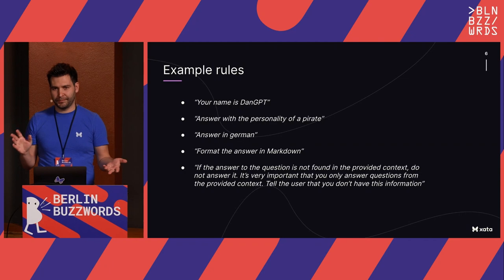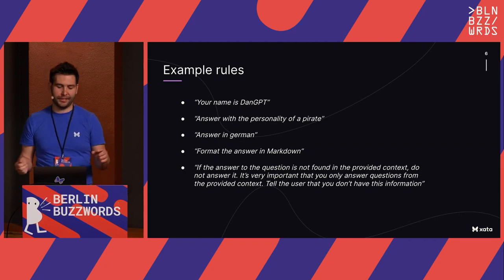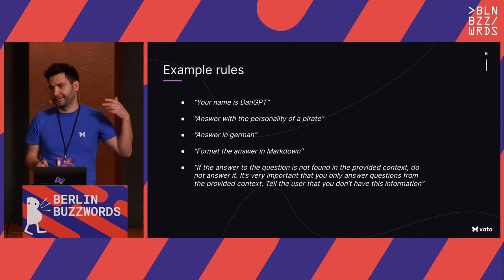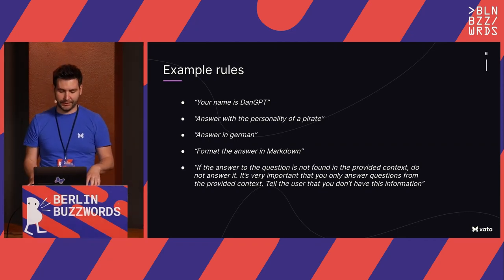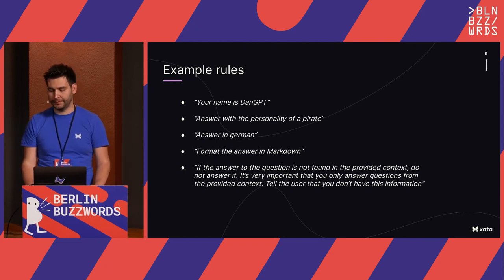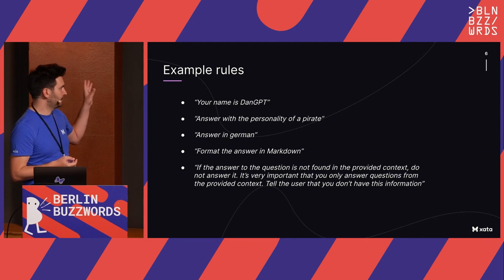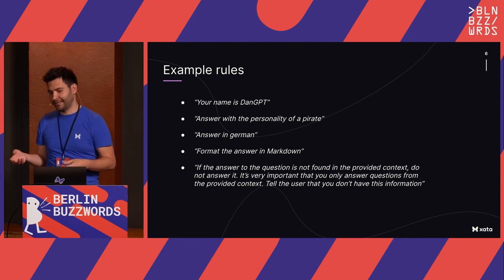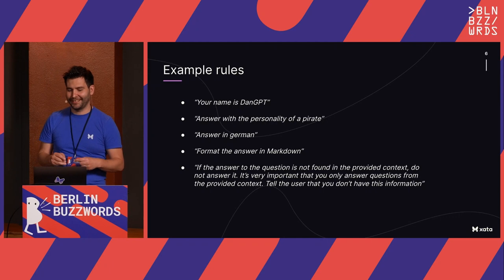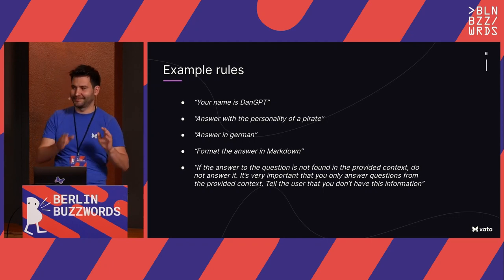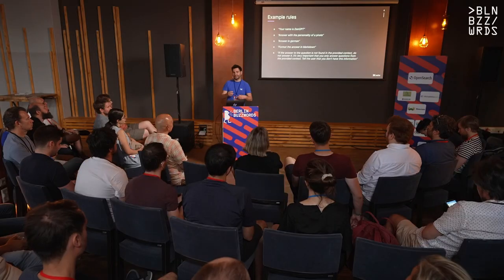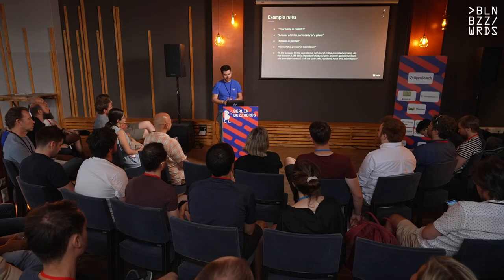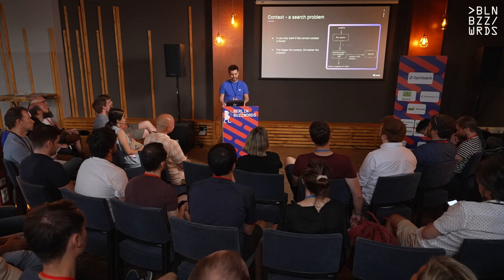Some example rules: you can do pretty much anything in plain English — give your bot a name, a personality, specify formatting like markdown when there's code in the response. What I'd recommend is including something like the last bullet point: if the answer is not in the provided context, it's better to not answer. You need to make it really clear to the model — 'do not answer it' — to reduce the chances of hallucinations. That helps, but not perfectly.